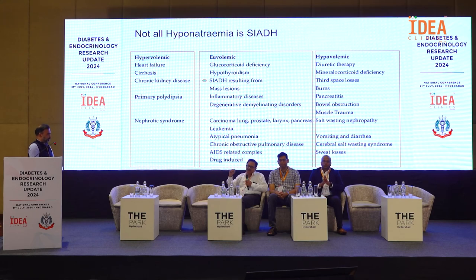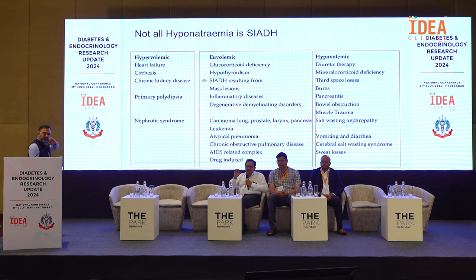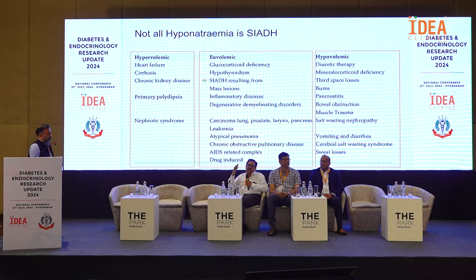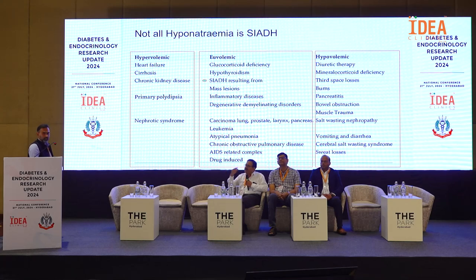How do we go about it? First, we find out whether the hyponatremia is hypertonic, normotonic, or hypotonic. Hypertonic causes include hyperglycemia and mannitol use, giving rise to pseudo-hyponatremia conditions, as do hyperproteinemia and hyperlipidemia. For hypotonic hyponatremia, clinically assess BP, pulse, skin turgor, and mucosal moisture. CVP measurement will tell you whether you are dealing with euvolemic, hypovolemic, or hypervolemic hyponatremia. Further segregation depends on urinary sodium — more than 20 or less than 20.